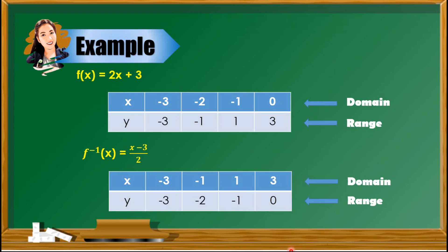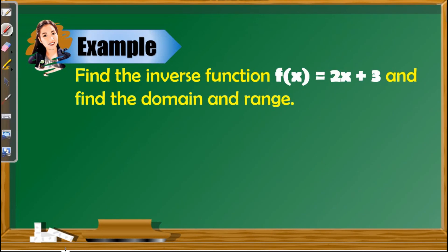Now let us have an example of finding the domain and range without the table of values. For the first example, we need to find the inverse of f(x) = 2x + 3 and find the domain and range. First, let us find the domain and range of the given function. Recalling the type of function and its graph, as we can see, we have a degree of 1, which makes this a linear function.